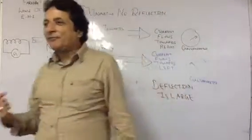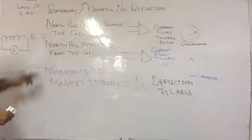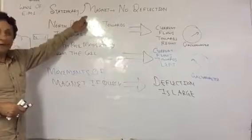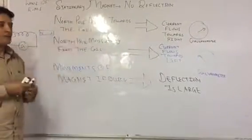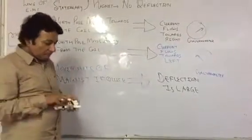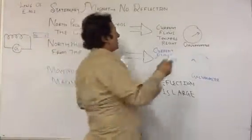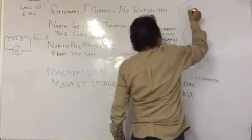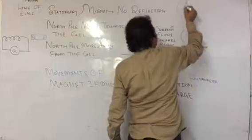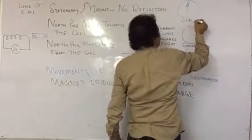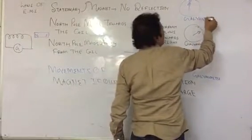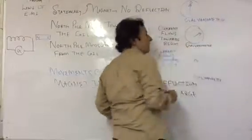Michael Faraday's first law - what is the first law? Stationary magnet, no deflection means if we have a magnet stationary, then the galvanometer shows zero deflection. There is no deflection, right?